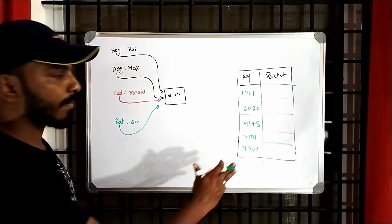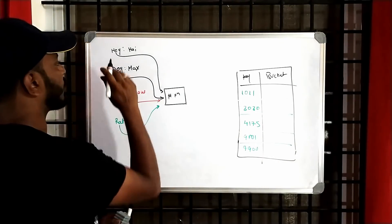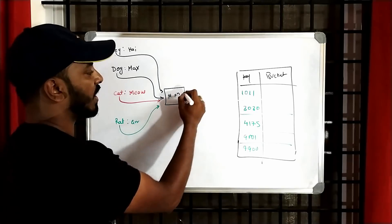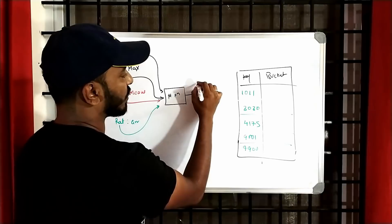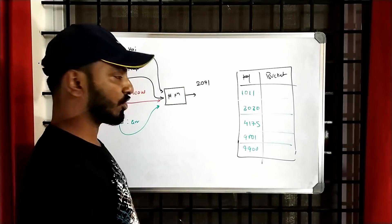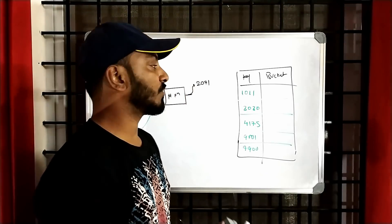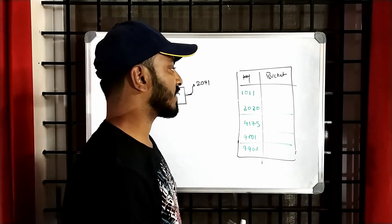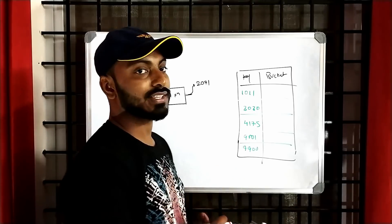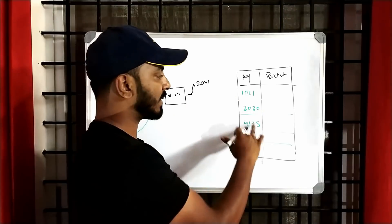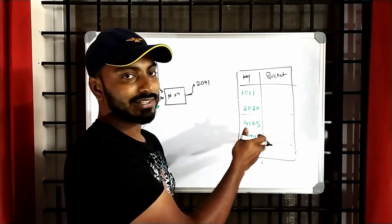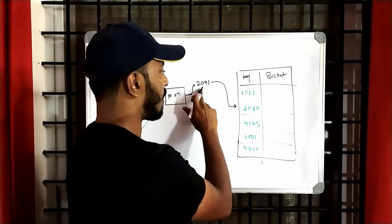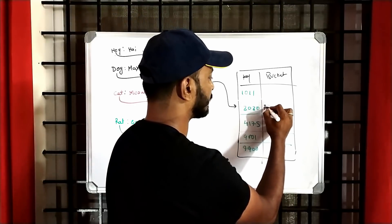Now let's try to save the key-value pairs. If we want to save key hey with value hi, we pass hey to the hash function and get some hash number — say 2071. Now, unlike earlier, you don't need to do a modulus or division operation. Instead, directly go and find a bucket key which is greater than or equal to the hash. So since 2071 is not found exactly, we find the next immediately greater bucket key, which is 3030. Go to that location and save the value hi there.